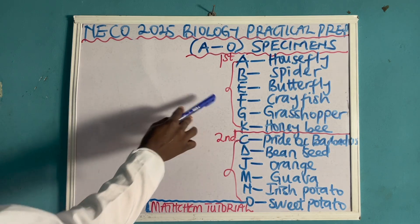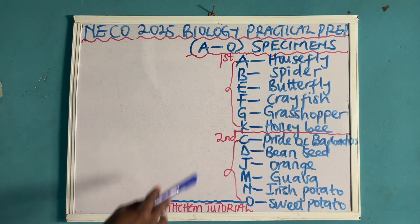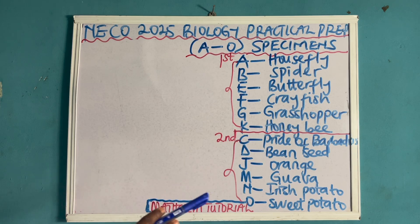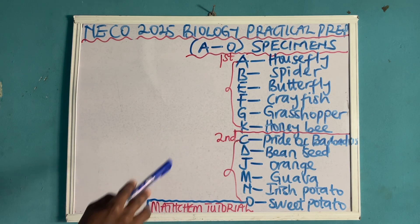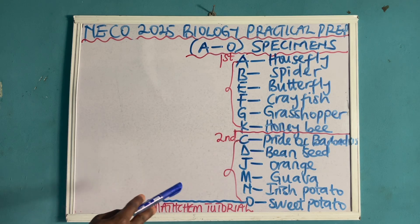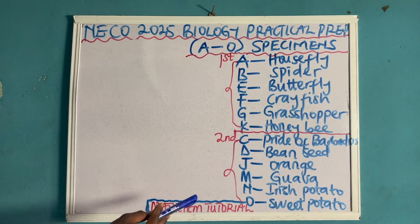Look at the first category. The specimens I categorize in this first category are: specimen A, that is housefly; specimen B, that is a spider; E, that is a butterfly; F, crayfish; G, grasshopper; and K, that is a bee. I believe that students can easily identify these specimens.